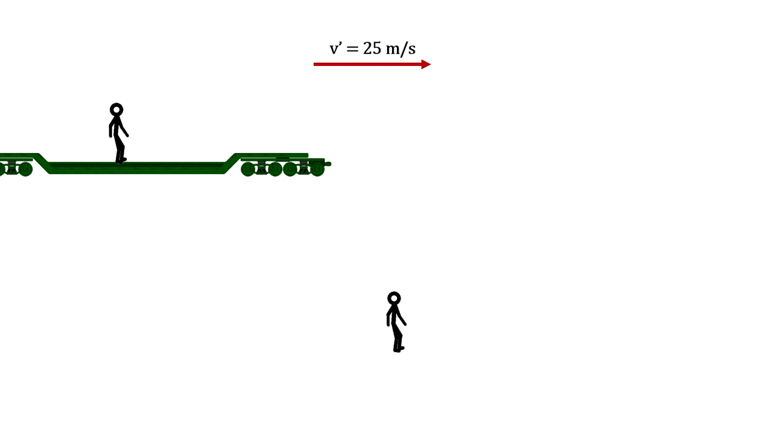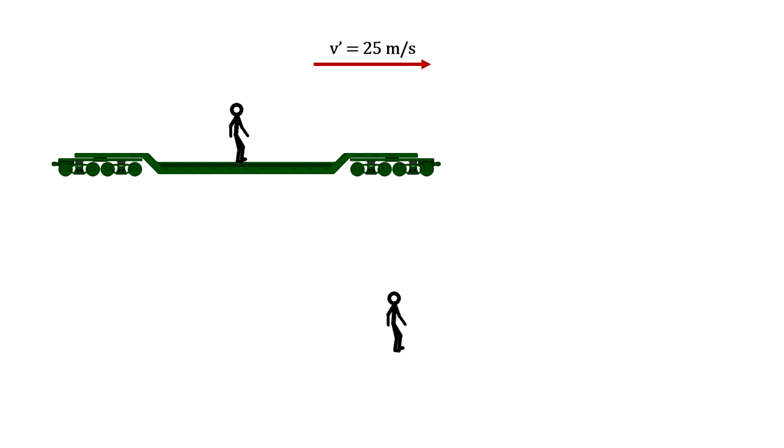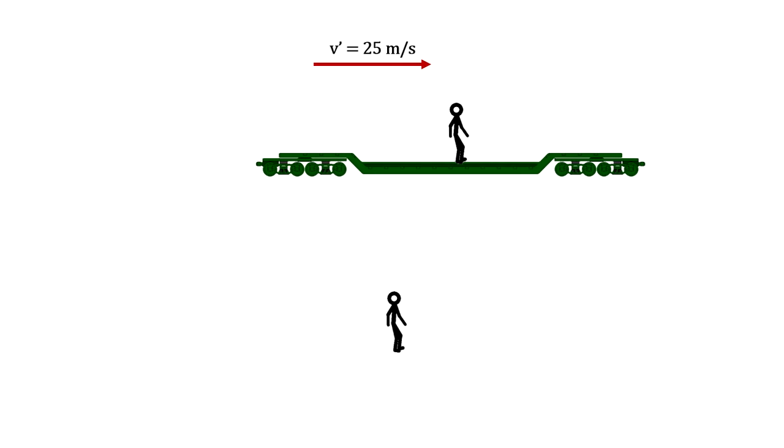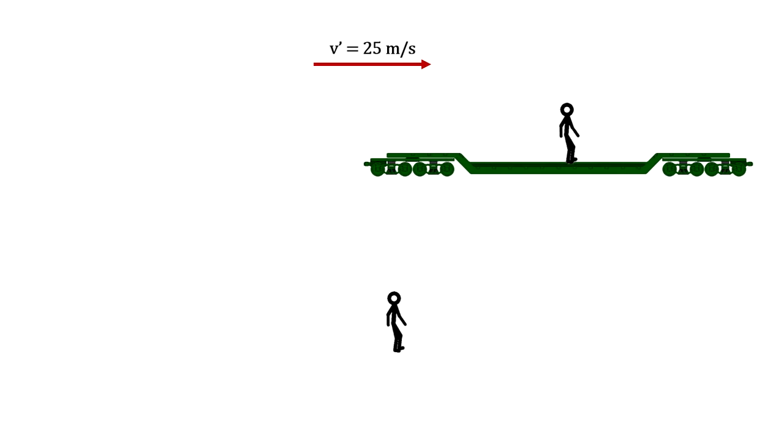The last non-intuitive consequence of the speed of light being the same for all observers that we'll cover is that the idea that things can happen at the same time no longer has meaning across inertial frames of reference. In other words, there is no such thing as at the same time for different inertial frames.